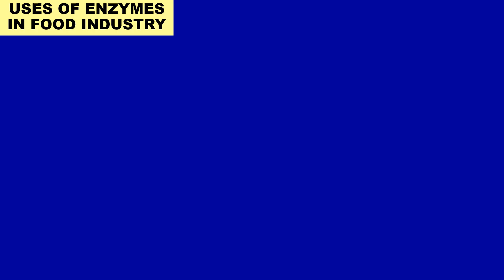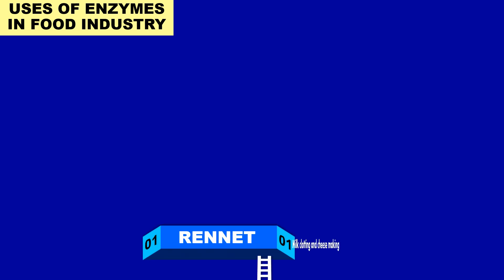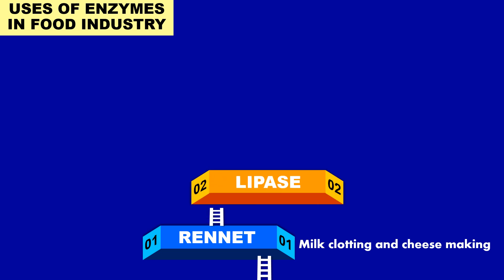The second area is the use of enzymes in the food industry. The first example is rennet, which is used for milk clotting and in the cheese-making process. The second example is lipase, which is used to enhance the flavor of cheese.